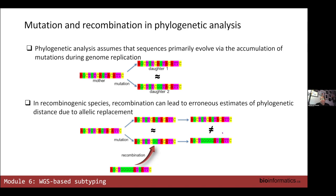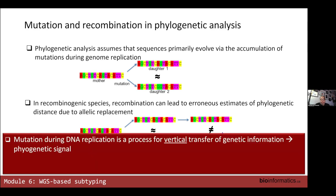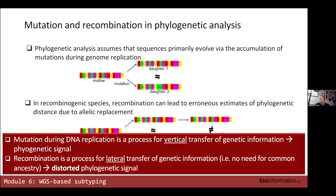With recombination, you can have an influx of genetic data coming in laterally, which violates the assumption of vertical transmission and mutations. Because of this, it can distort phylogenetic signal.